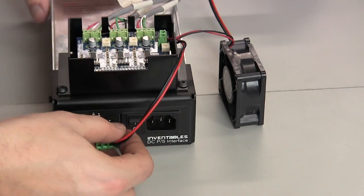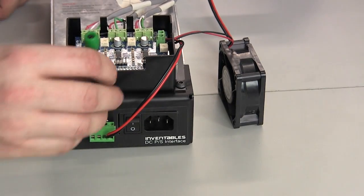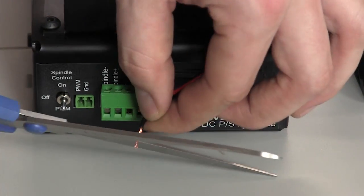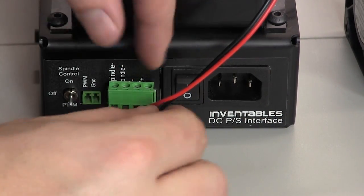Again, make sure that all of the copper from the wire makes it into the terminal block. If there's too much copper exposed, trim some off and put it back into the terminal.